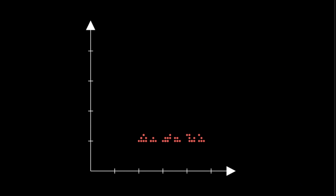Again, the data set of students in a class, but now the x-axis denotes the weight of the students and the y-axis denotes the age of the students in the class. In general,